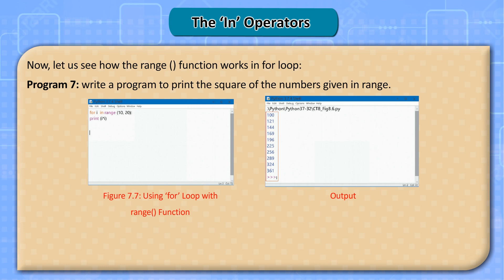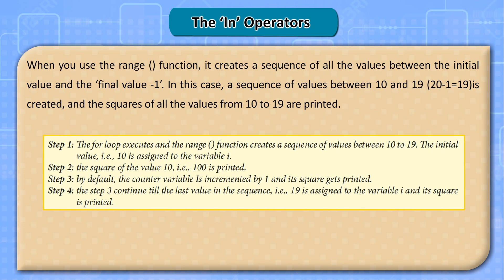Program 7: write a program to print the square of the numbers given in range. When you use the range function, it creates a sequence of all values between the initial value and the final value minus 1. In this case, a sequence between 10 and 19 (20 minus 1 equals 19) is created, and the squares of all values from 10 to 19 are printed. Step 1: the for loop executes and the range function creates a sequence from 10 to 19; the initial value 10 is assigned to variable i. Step 2: the square of 10, i.e., 100, is printed. Step 3: by default the counter is incremented by 1 and its square gets printed. Step 4: this continues till 19 is assigned to i and its square is printed.